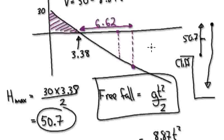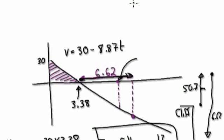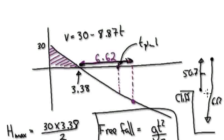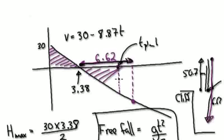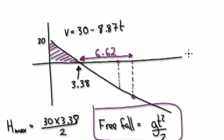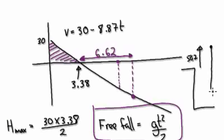The distance of the free fall is the area of this triangle on the velocity-time graph. Jump to the free fall formula. We are free falling for 6.62 seconds. This is 50.7 meters going up. Now, what is the distance covered during the free fall? Jump to the free fall formula to calculate this distance.